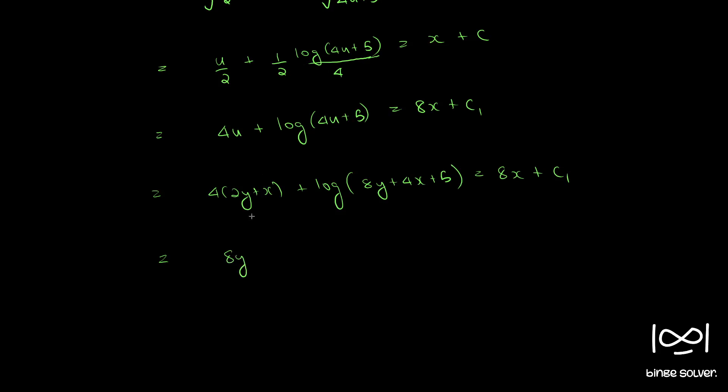Bringing 8y minus 4x to the other side, plus log 8y plus 4x plus 5 equal to c. Now we can write this as 8y plus 4x plus 5 equal to 4 times 2y minus x plus c1.